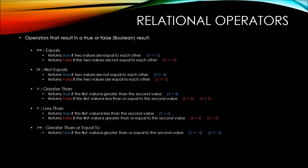The greater than or equal to relational operator returns true if the first value is greater than or equal to the second value. So 5 greater than or equal to 4 would return true, and so would 5 greater than or equal to 5. However, the greater than or equal to relational operator returns false if the first value is less than the second value — so 5 greater than or equal to 6 would return false.